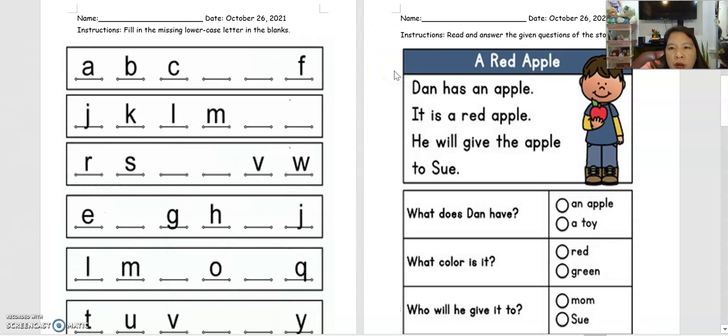For the second part of our activity, we have a short passage. You have to read this short story to answer the questions below. You have to read this one first, and then the three questions down here, you're going to pick your correct answer.